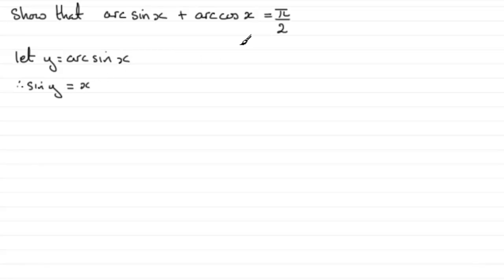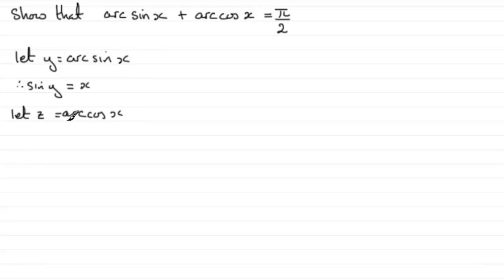And if I was to let another angle equal arc cos x — let's say z — let z equal arc cos x, then if we take the cosine of both sides, we get cos of z equals x.